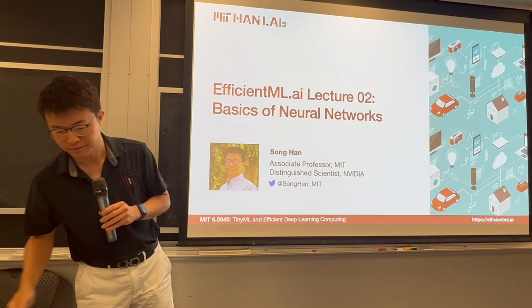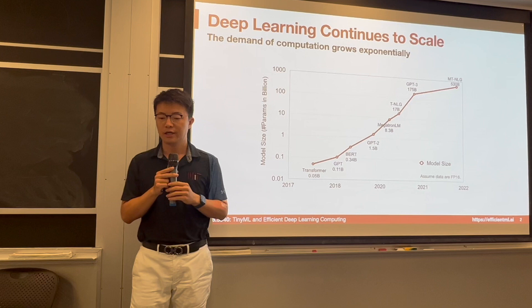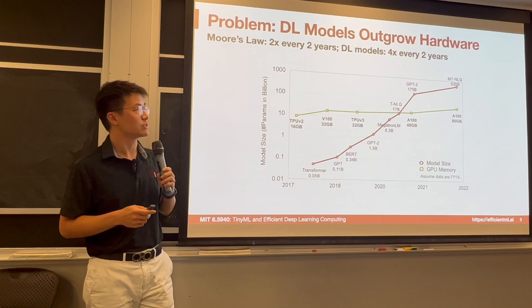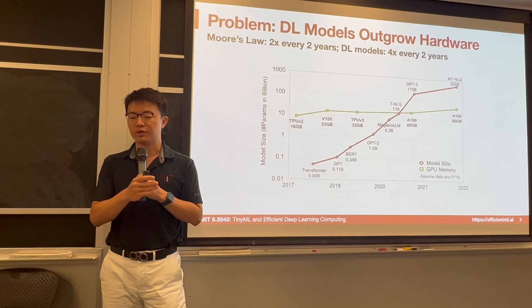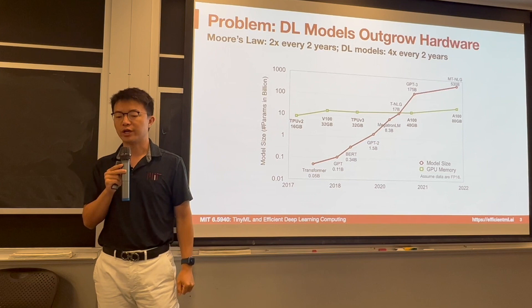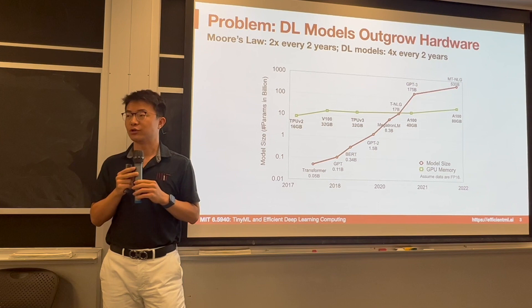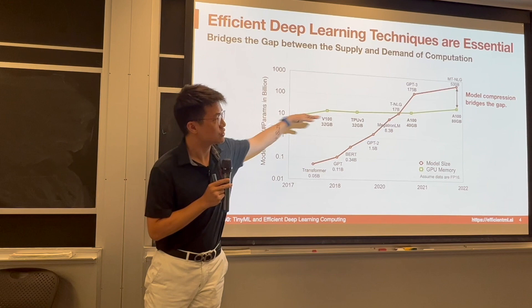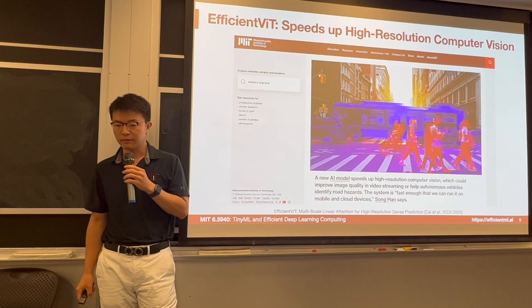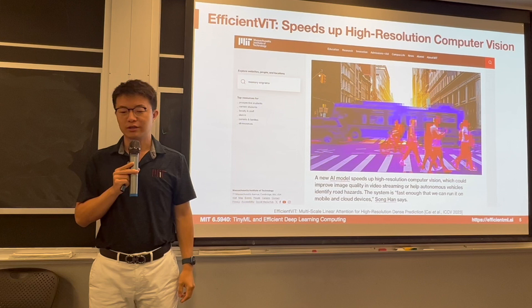Let's get started with EfficientML.ai lecture 2, which is basics of neural networks. As deep learning continues to scale, the demand for computing is growing exponentially fast in recent years — as opposed to the supply of computing shown by the green line, illustrating GPU memory available over the past couple of years. Moore's law is doubling the transistor every two years, but deep learning models are growing more than 4x every two years. We need techniques like model compression and efficient AI computing to bridge the gap between supply and demand.